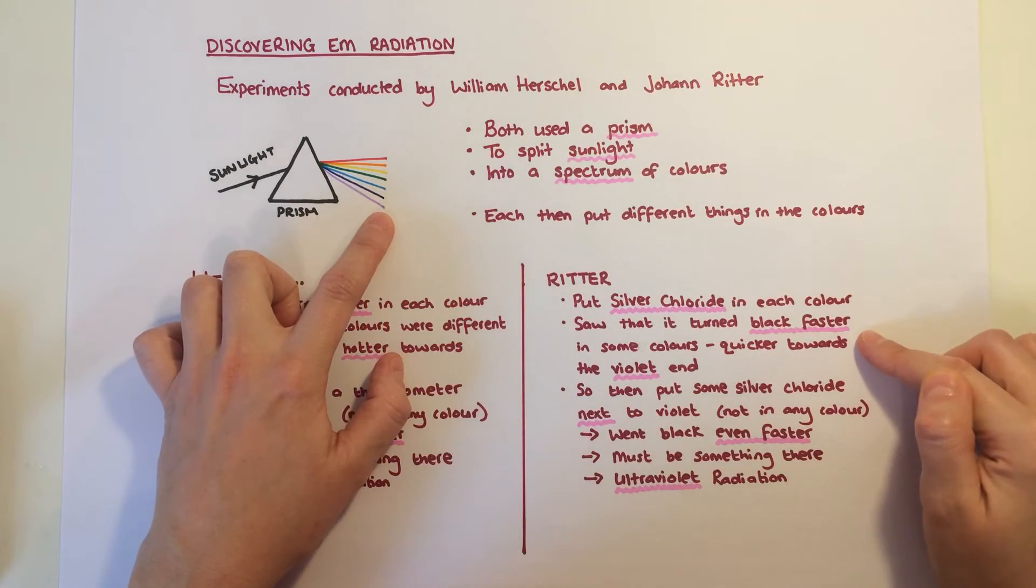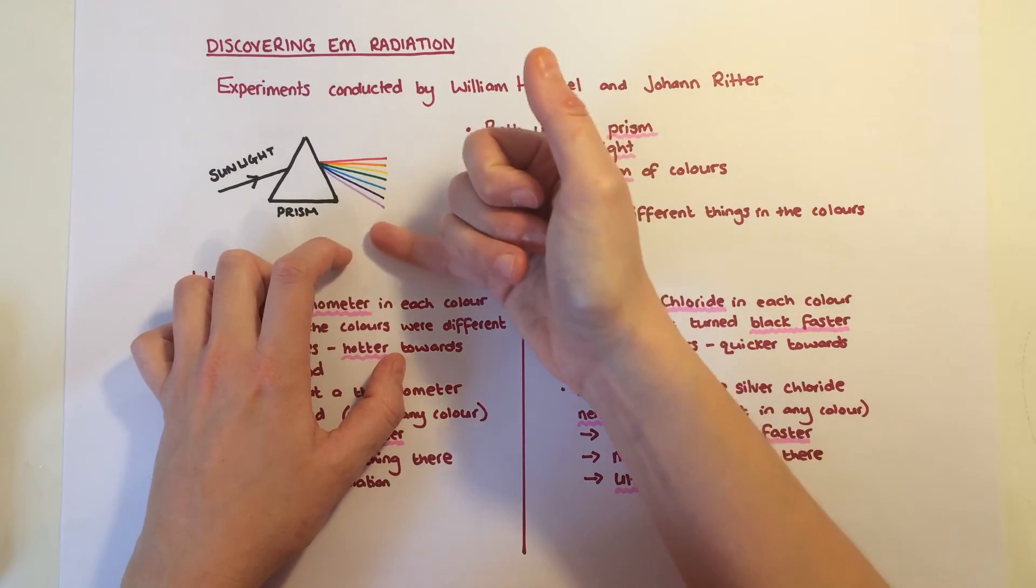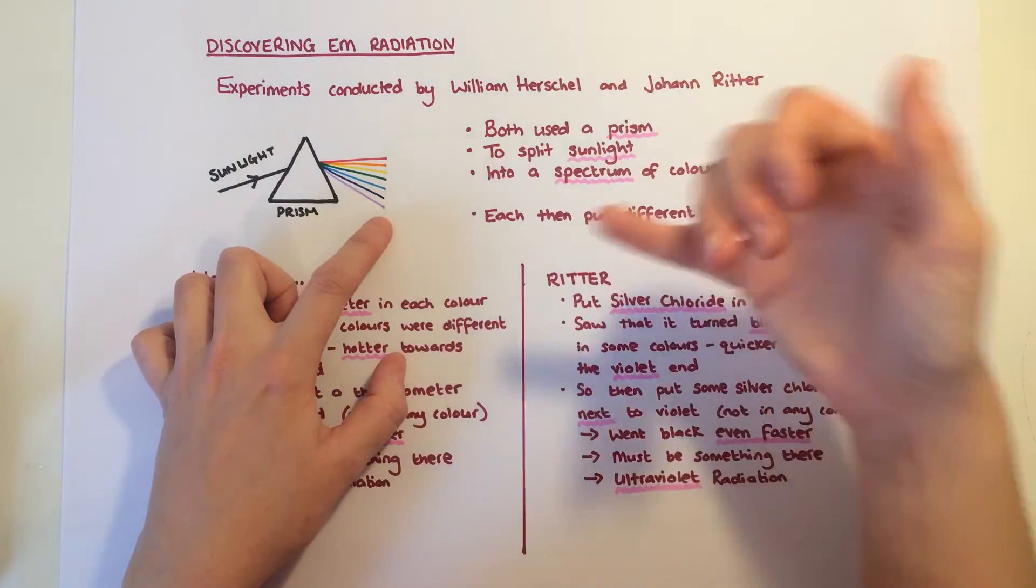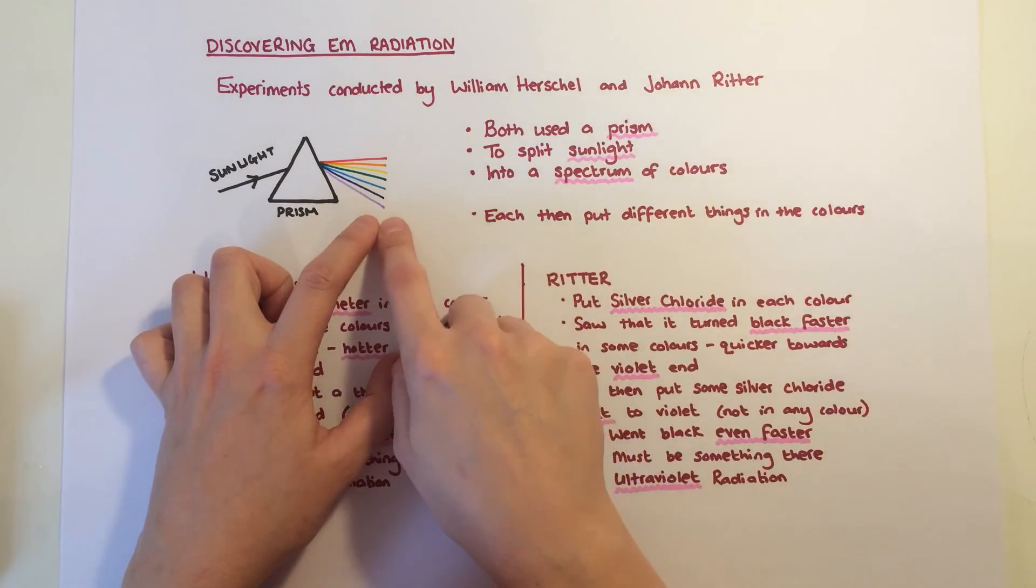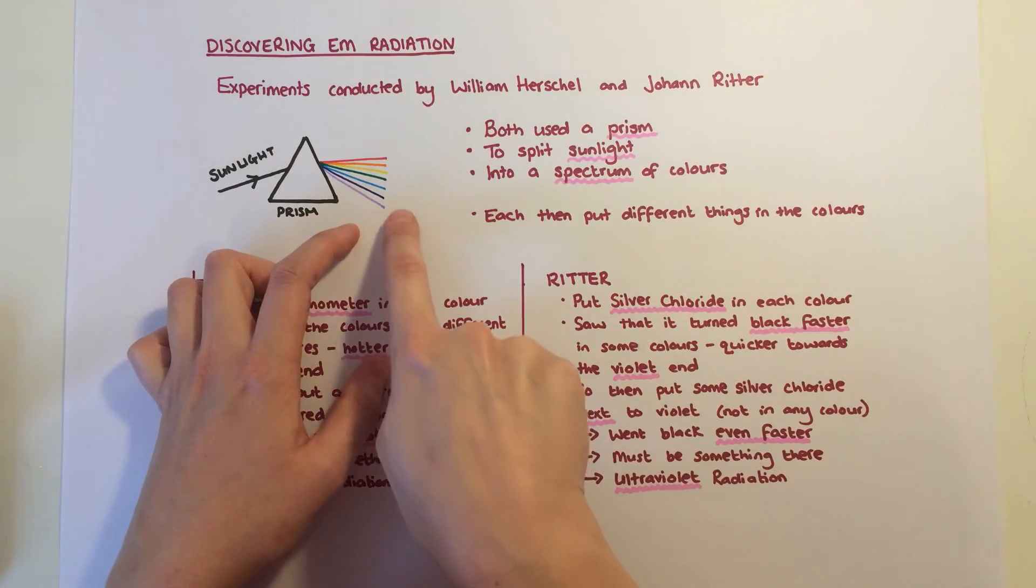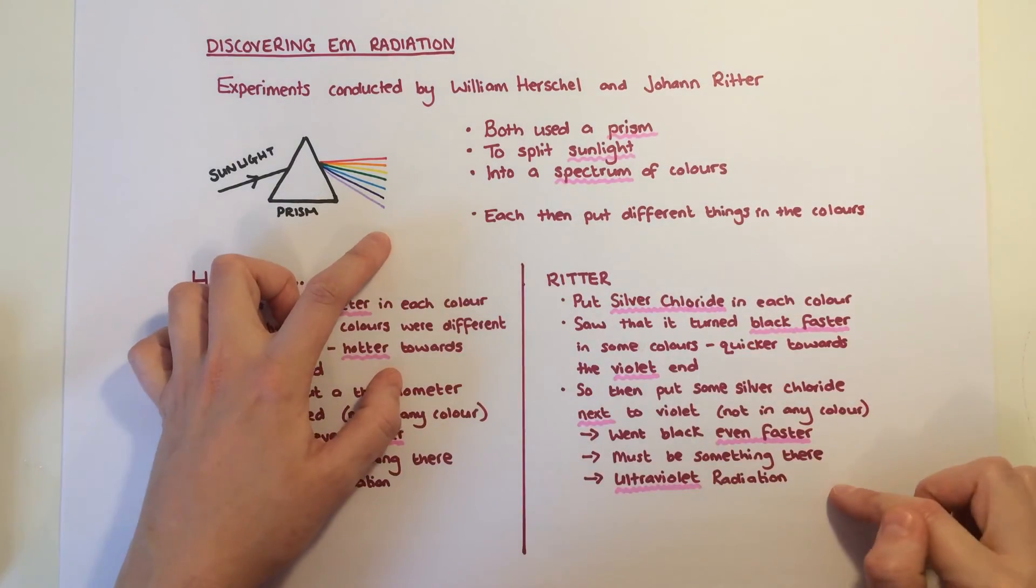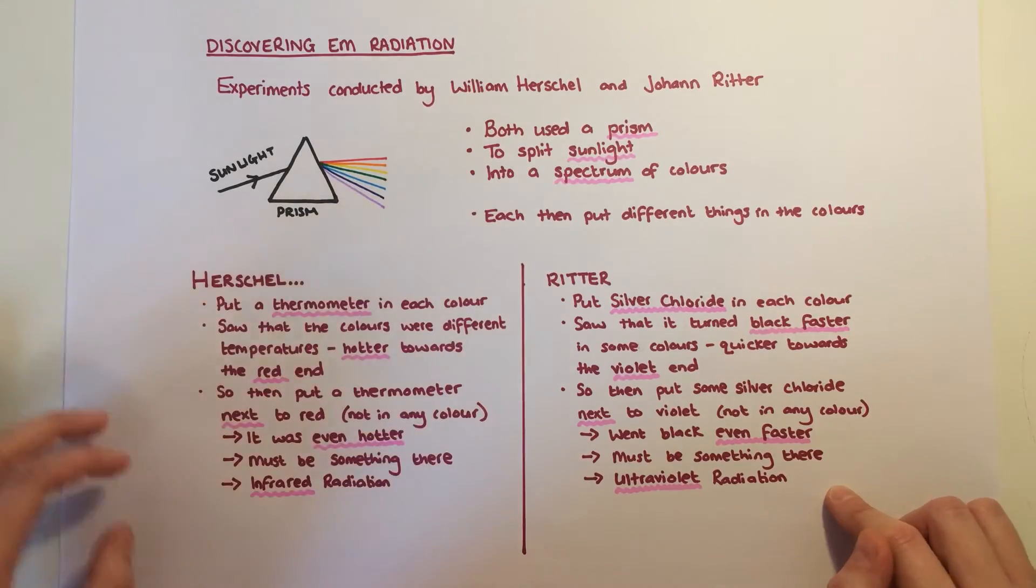And it was quicker towards the violet end. So seeing a pattern, he decided to put some silver chloride here next to the violet. And it turned out that went black even faster. So there must be something shining here that we can't see, and that turned out to be ultraviolet radiation.